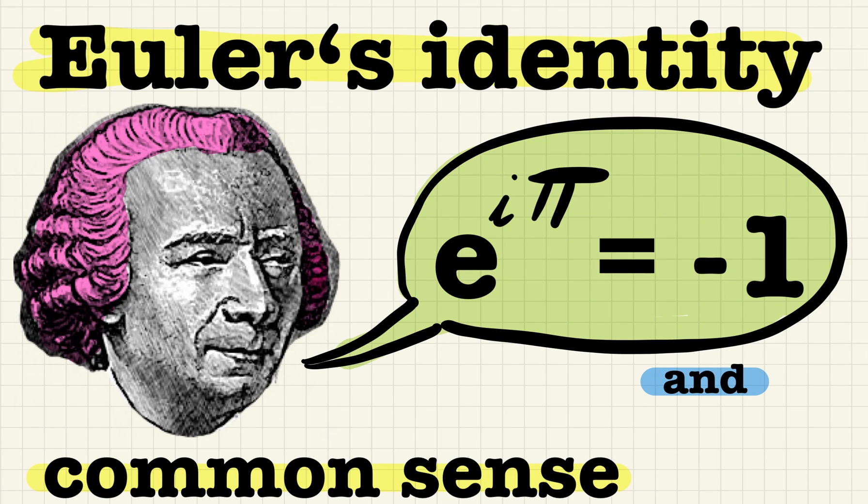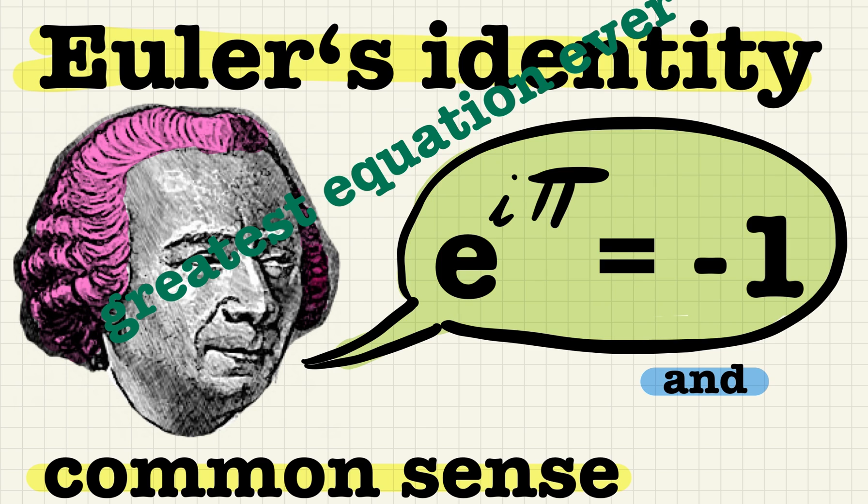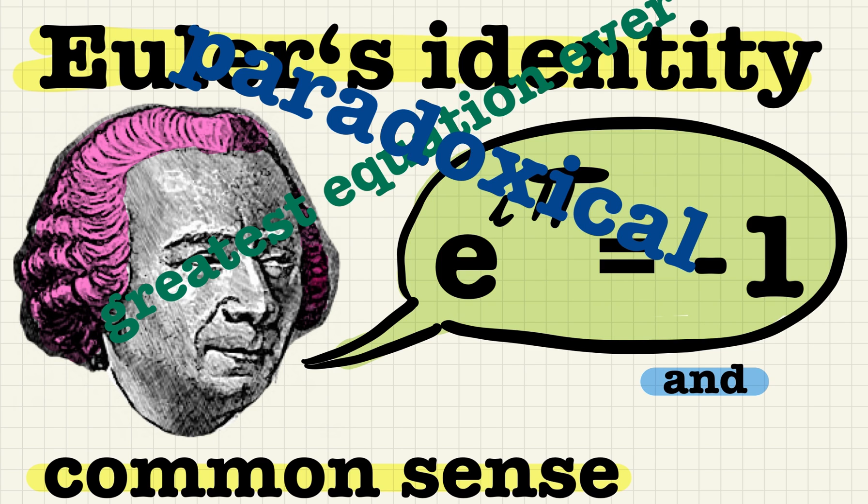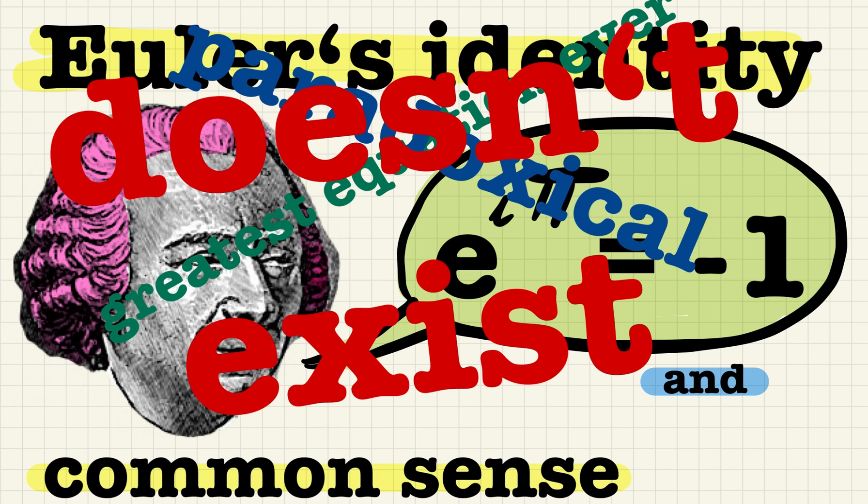Looking up Euler's identity, you come across such quotes as 'The greatest equation ever,' 'Absolutely paradoxical, we cannot understand it and we don't know what it means,' 'i is a number that doesn't exist.' Being a theoretical physicist, I was always confused by this apparent conflict. How can the greatest equation ever contain quantities that don't exist?